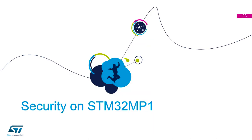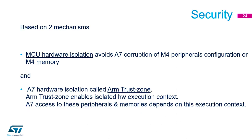Regarding security — this won't cover the full security of the whole system, as that's a separate topic. We're looking at the mechanisms for protecting application integrity. We can do MCU hardware isolation, meaning the A7 cannot corrupt anything the M4 is doing. We also have isolation for the Arm TrustZone — the secure context — so the M4 and the secure side of the A7 each work separately.